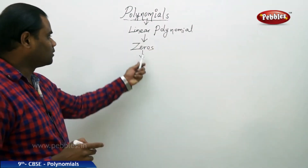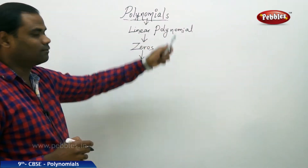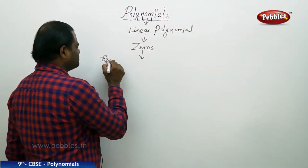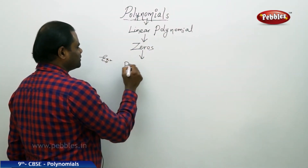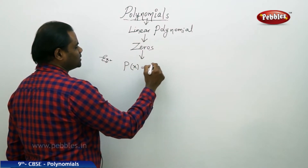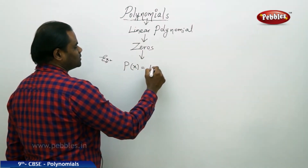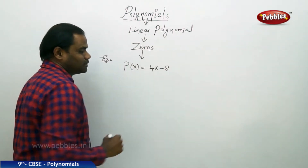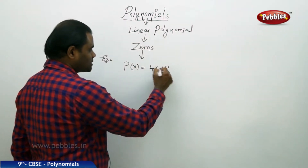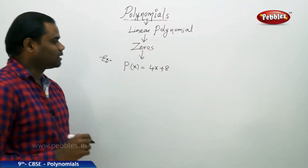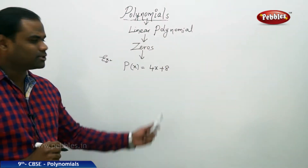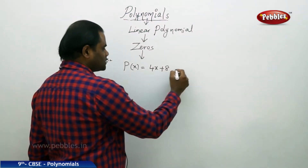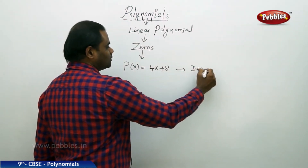Let's investigate the zeros of a linear polynomial. For example, I take the linear polynomial p(x) = 4x minus 8, or 4x plus 8, and I want to find the zero of this linear polynomial, which has degree equal to 1.